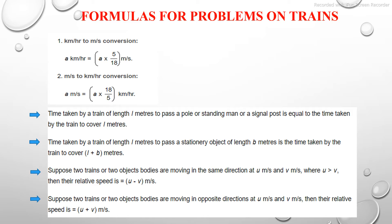We will see some basic formulas which will be helpful in doing the solutions easily and in less time. There are two basic formulas. The first is to convert kilometer per hour to meter per second, and meter per second to kilometer per hour. If you want to convert kilometer per hour to meter per second, multiply by 5/18. To convert meter per second to kilometer per hour, multiply by 18/5.